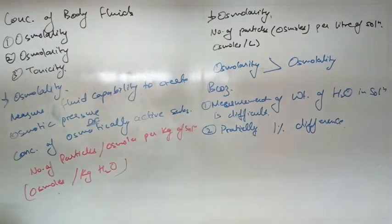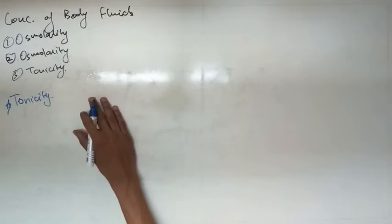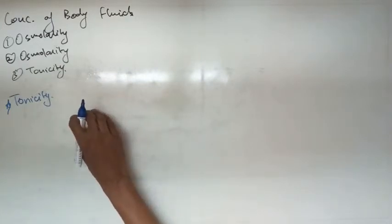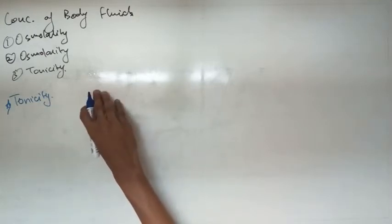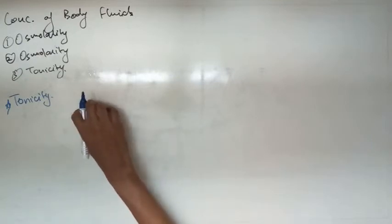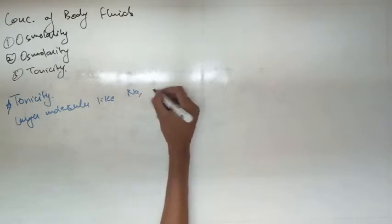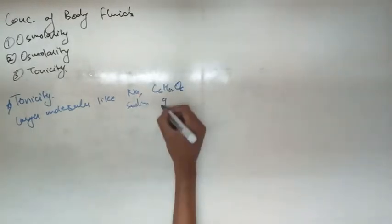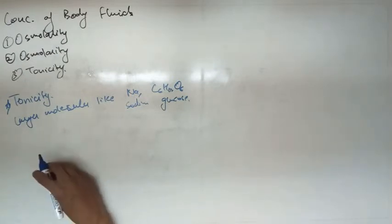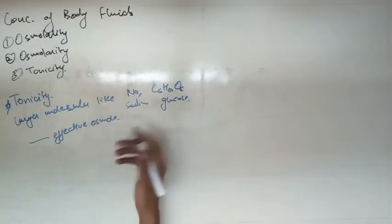Now let's talk about tonicity. Usually the movement of water or fluid is not controlled by small molecules. Larger molecules control how liquid moves into or out of a cell or around different compartments. Small molecules like urea and alcohol — they are called ineffective osmoles — don't control the amount of water that crosses the cell membrane. On the other hand, larger molecules like sodium and glucose are mainly responsible for water crossing the compartment; they influence the movement of water and are called effective osmoles.